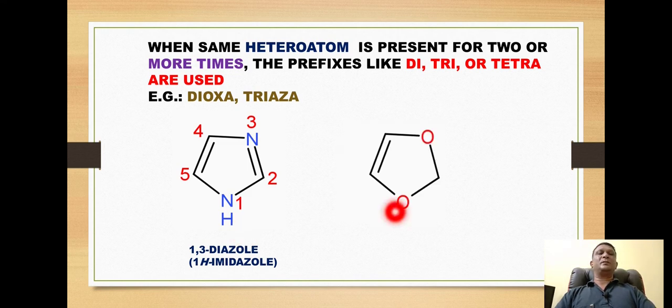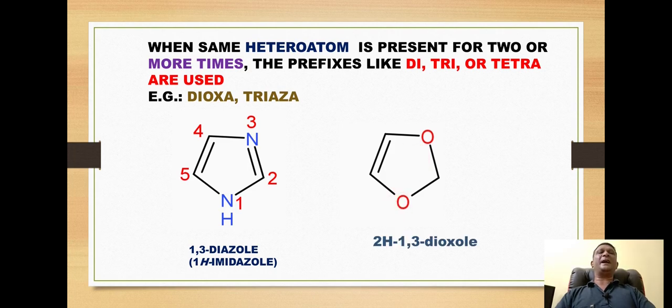Similarly, if a ring has two oxygen atoms, the prefix used is 'dioxa'.